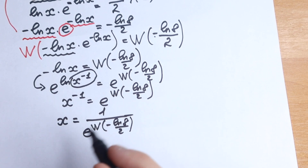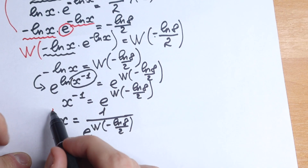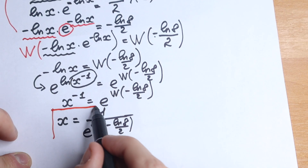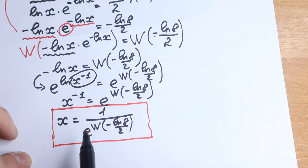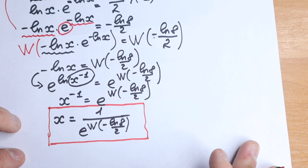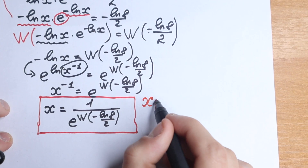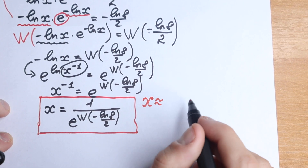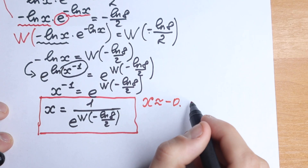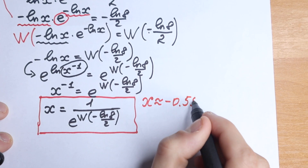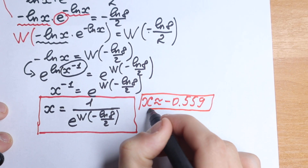This is x to the minus 1, but we need x. Let's bring it to the denominator. Our answer is: x equals 1 over e to the power of Lambert W of minus natural log 8 over 2. Using a calculator with a Lambert W library, x is approximately equal to minus 0.559.